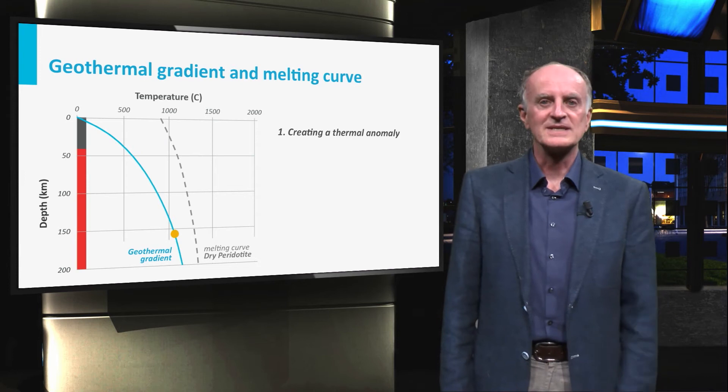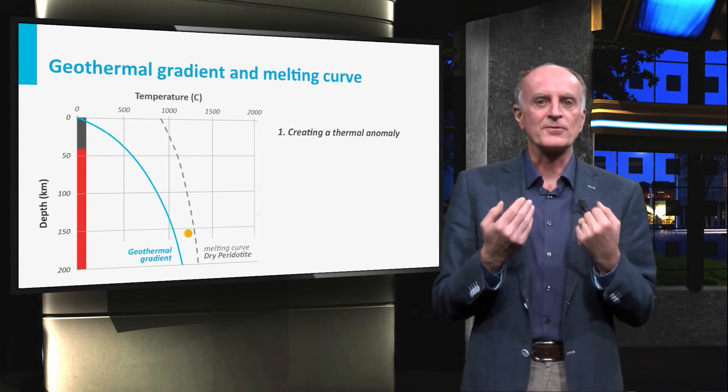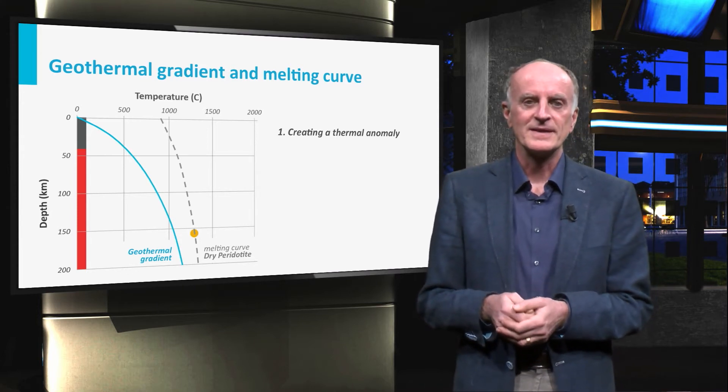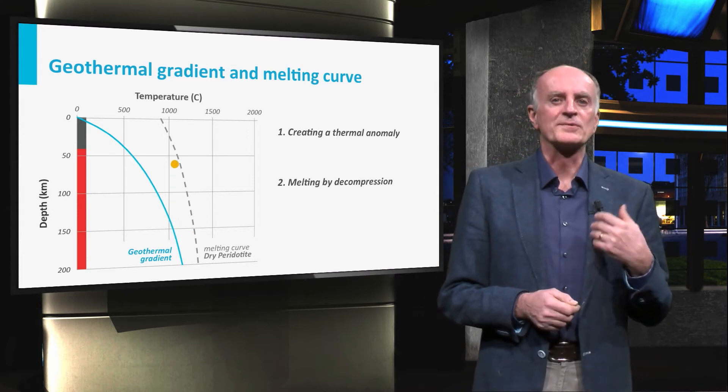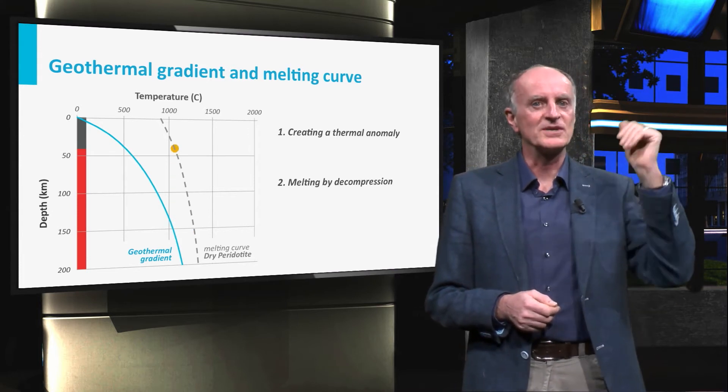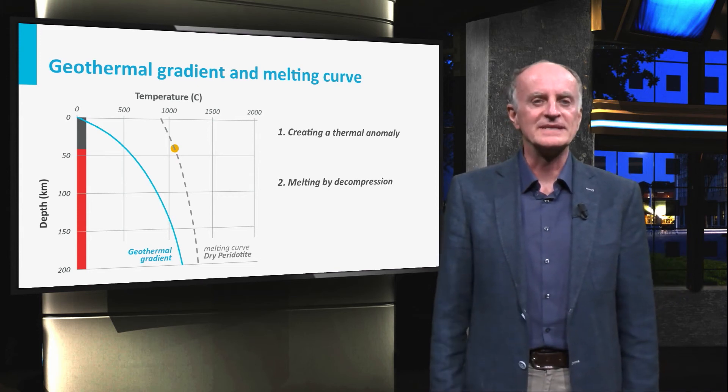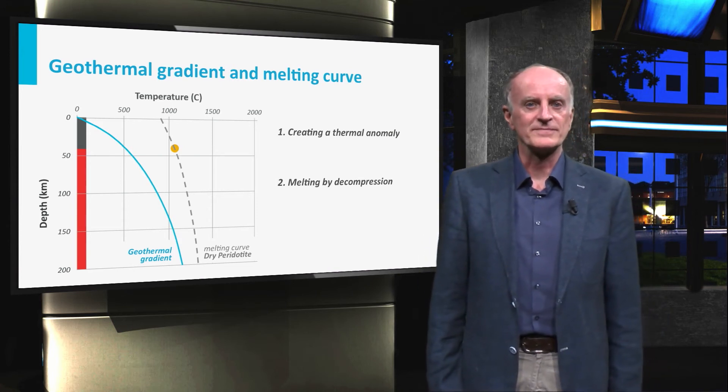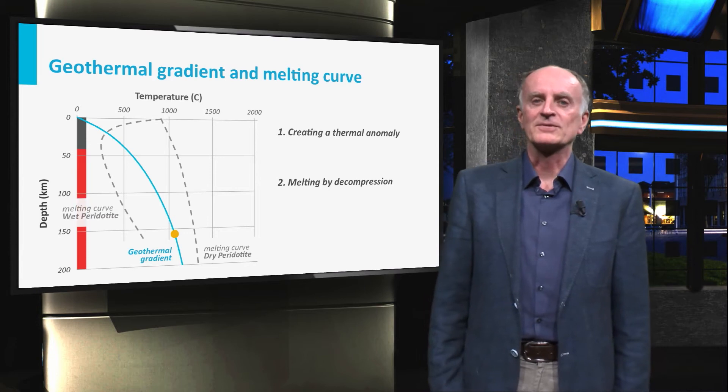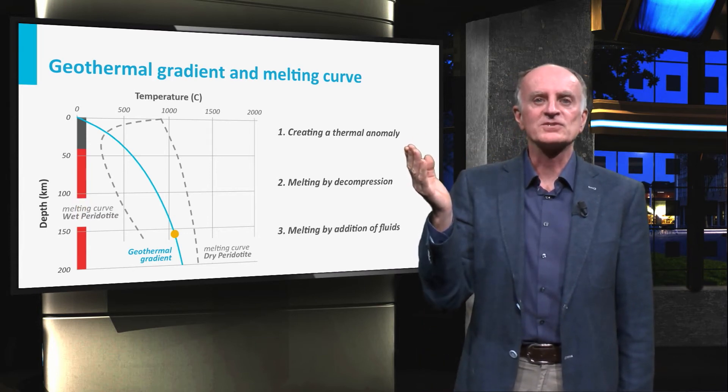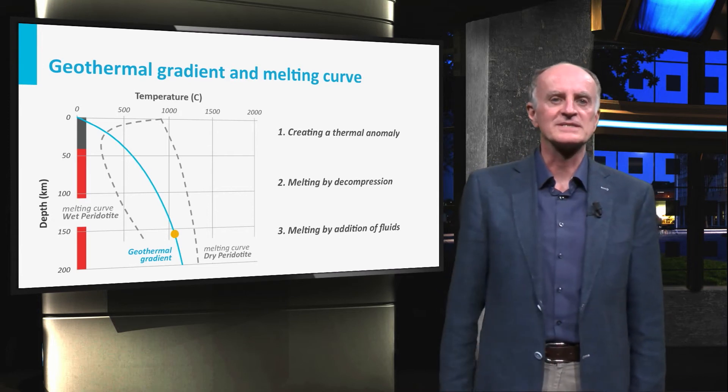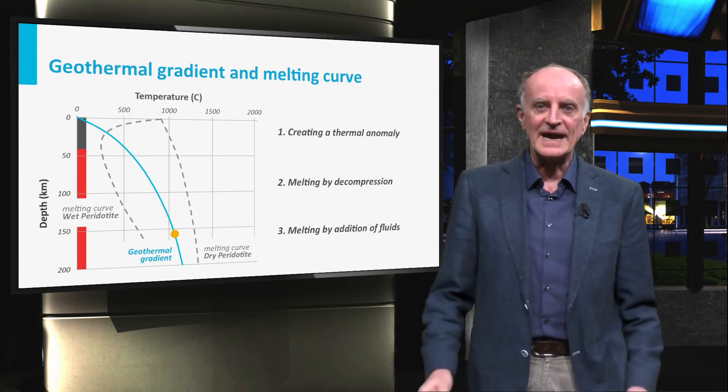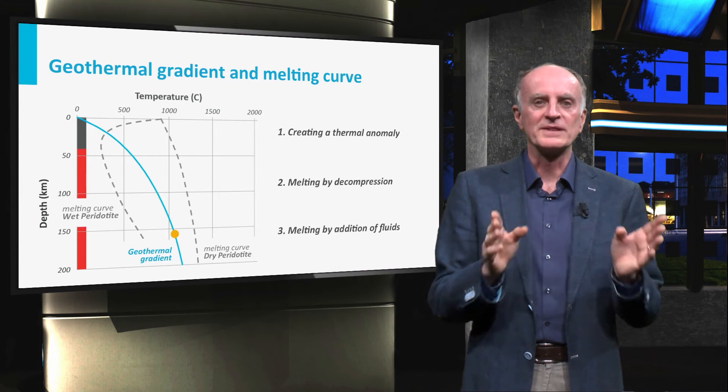The first process is simply heating. We call this creating a thermal anomaly. This is feasible, but physically very difficult in the deep Earth. A second possibility is to move the rocks upward. This is potentially a good mechanism, but movements of many kilometers are needed. The third process relates to the change of position of the melting curve. When fluids are added to the system, the melting curve shifts to the left and rocks previously in the stable field start melting. This is what happens in subduction zones, where fluids are added to the crust, thereby lowering the melting temperature.